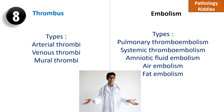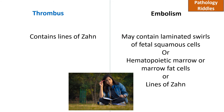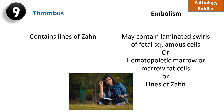Types of embolism are pulmonary thromboembolism, systemic thromboembolism, amniotic fluid embolism, air embolism, and fat embolism. Histologically, a thrombus will contain lines of Zahn formed because of coagulation, while an embolism may contain laminated swirls of fetal squamous cells, hematopoietic marrow, marrow fat cells, or even lines of Zahn.